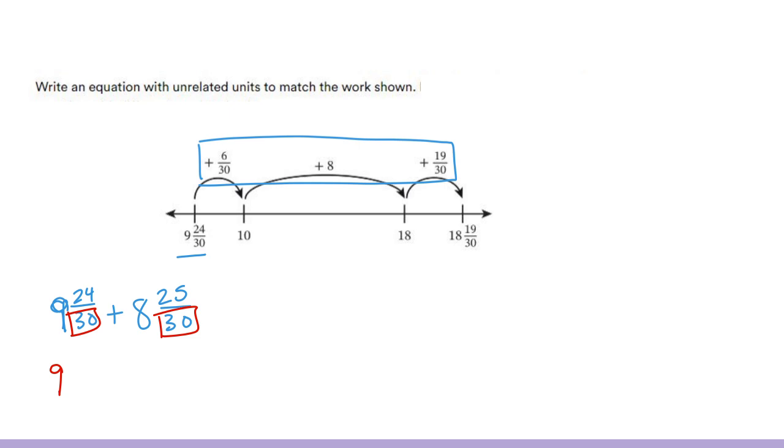On this first one, 9 and 24 thirtieths, I see that I could divide by 6. So, that would give me 9 and 4 fifths. On my 8 and 25 thirtieths, I see that I could divide by 5. 25 divided by 5 would be 5, and 30 divided by 5 would be 6. So, this fraction could be written as 5 sixths.